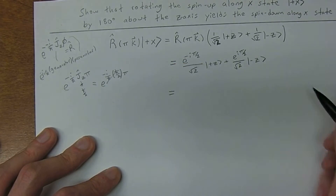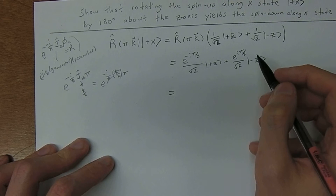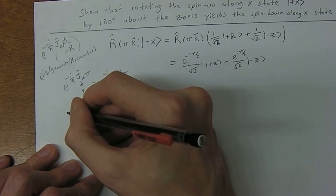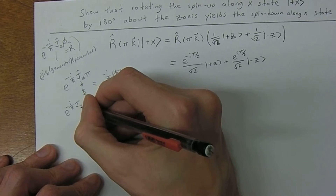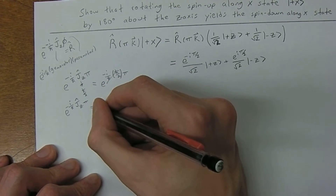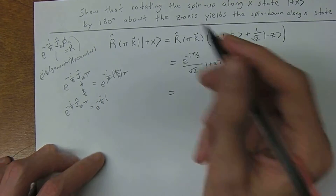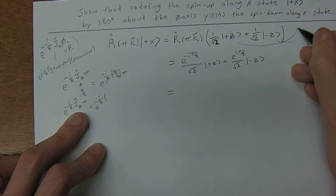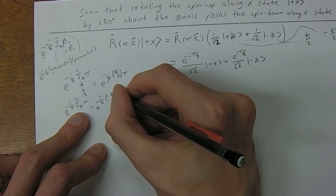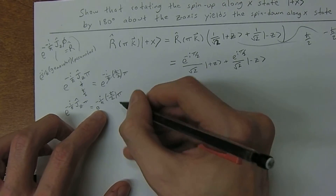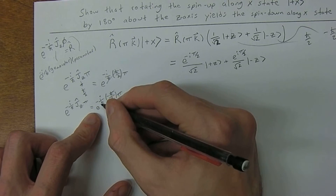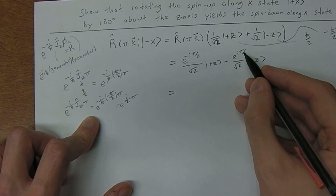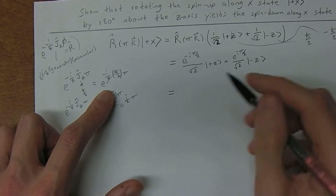The h-bar cancels, leaving negative i pi over 2 for the plus-z term. For the minus-z term, we have e to the negative i over h-bar times the generator times pi, but now jz gives negative h-bar over 2. The two negatives cancel, leaving positive i pi over 2. So that's where each phase factor comes from, and this is the relative phase.